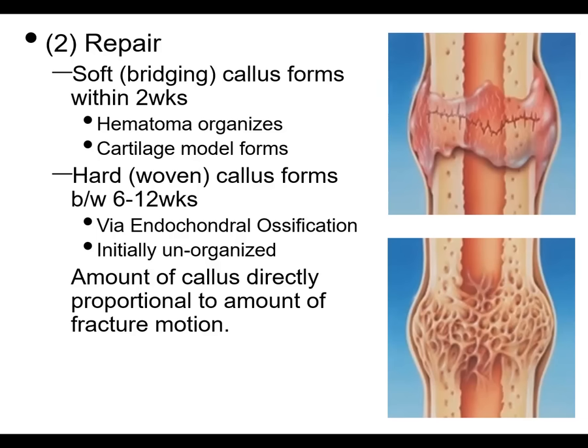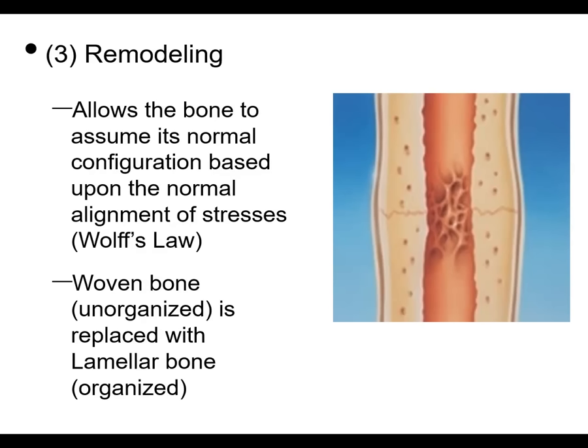That hard callus is bone forming through endochondral ossification. Initially it's unorganized, but it then becomes organized in the remodeling phase where you now have mature bone. There are stresses that cause the bone to remodel accordingly — where you're under more compressive stress, more bone is formed. That woven bone is replaced with lamellar bone, like the nice architectural structure seen in cortical bone.